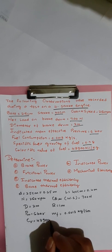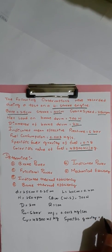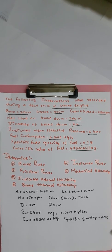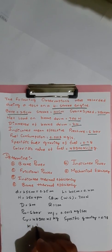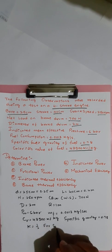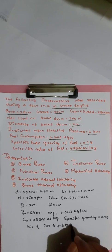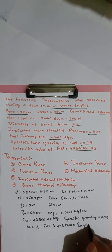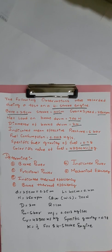The calorific value CV is equal to 43,900 kilojoules per kg. The specific gravity is equal to 0.78. We know that the value of k is equal to 1 by 2 for a four stroke engine.